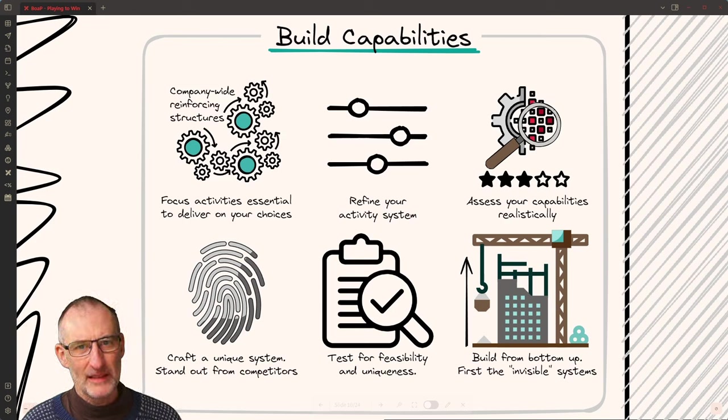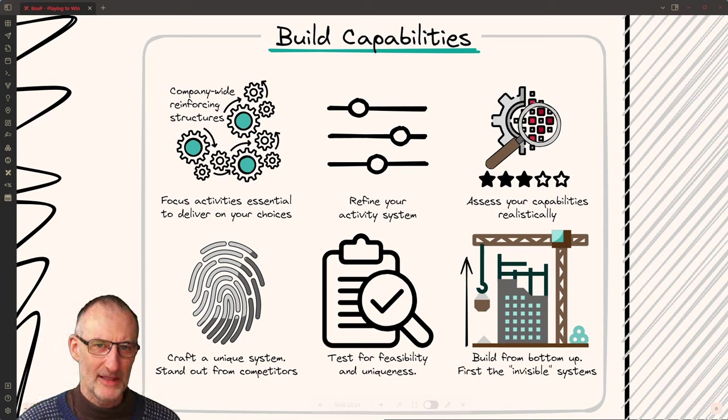That is your long-term competitive advantage so make sure that you build a unique system. As you build your unique system, reverse engineer the activity system of your competitors and make sure that you have a better system. And as you look at your own capabilities, do a realistic assessment and do tests for feasibility so you're not surprised by living in lala land when you go out to the real world to execute your capabilities.